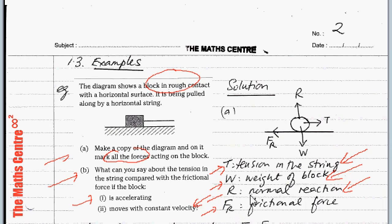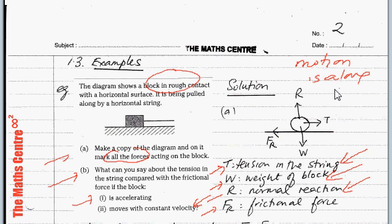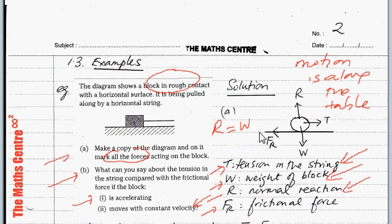Motion is horizontal, along the table. Therefore we have vertical equilibrium, which means R equals W. Now we can look at part B: what can you say about the tension when the block is accelerating?